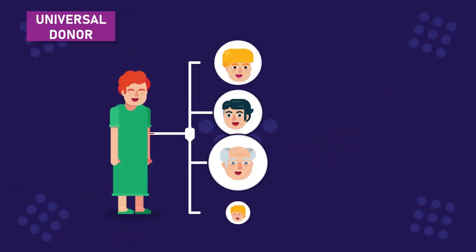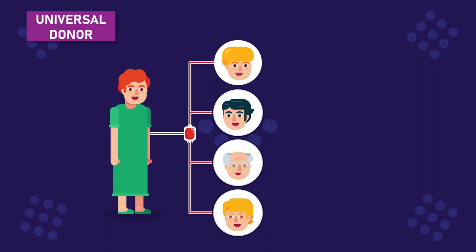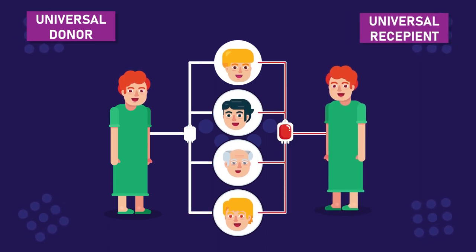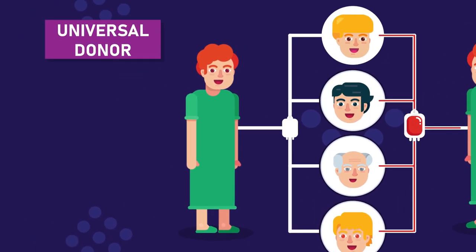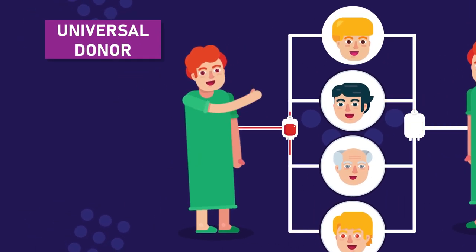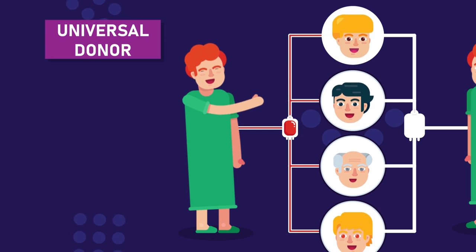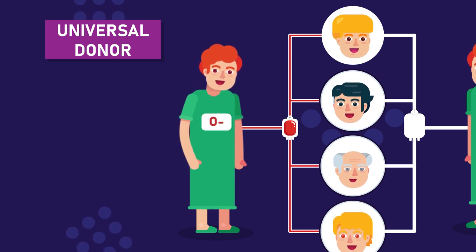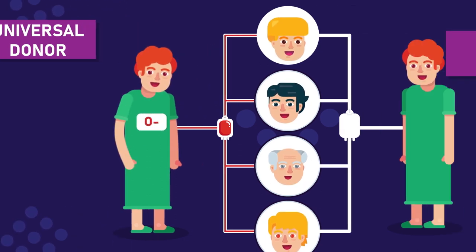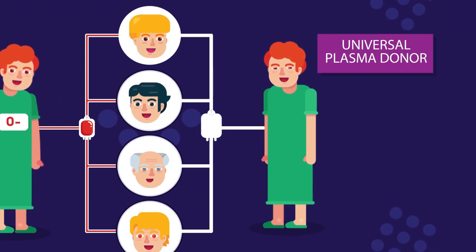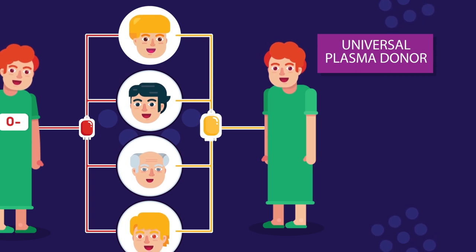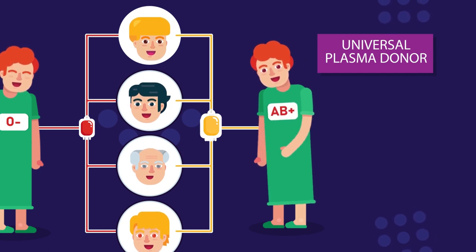Are you a universal donor or a universal recipient? The universal red cell donor has type O negative blood. The universal plasma donor has type AB positive blood.